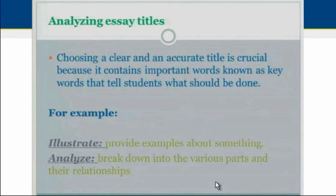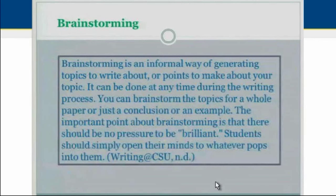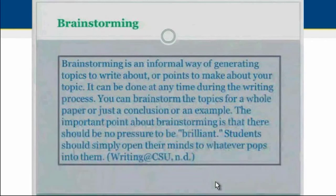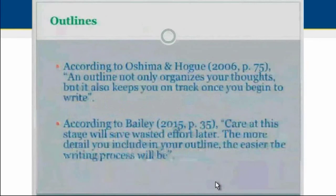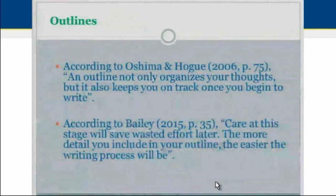Brainstorming is an informal way of generating topics to write about or points to make about your topic. It can be done at any time during the writing process — for a whole paper, just for a conclusion, or for an example. The important thing is that there should be no pressure to be brilliant; a student should simply open their mind to whatever comes to them. Preparing an outline not only organizes your thoughts but also keeps you on track once you begin to write. Bailey mentions that care at this stage will save wasted effort later, and the more detail you include in your outline, the easier the writing process will be.